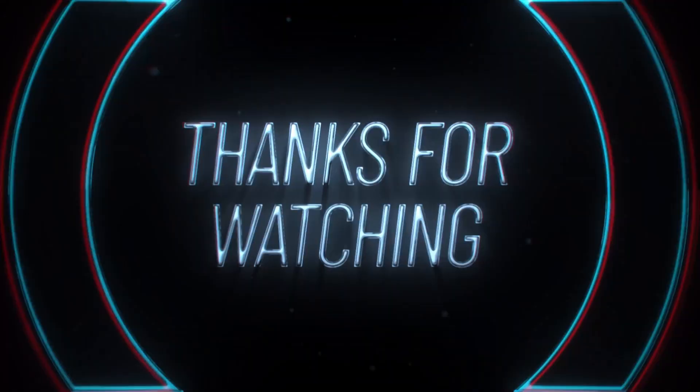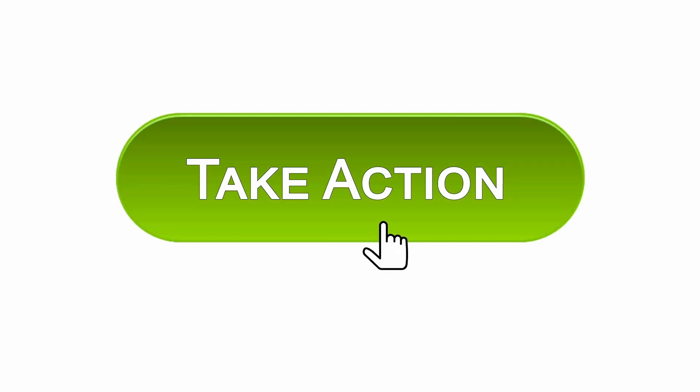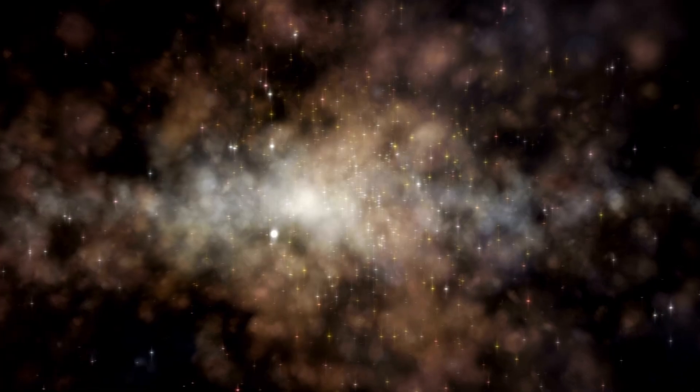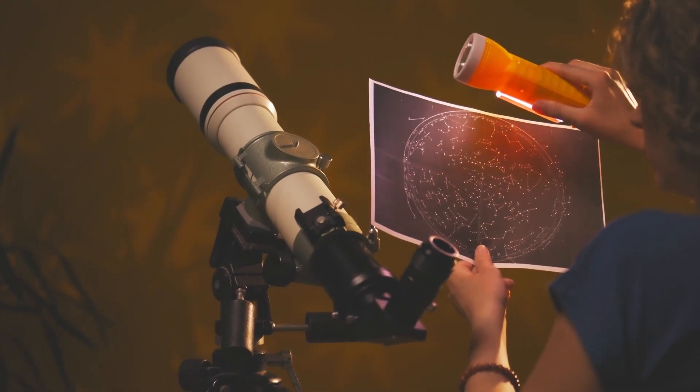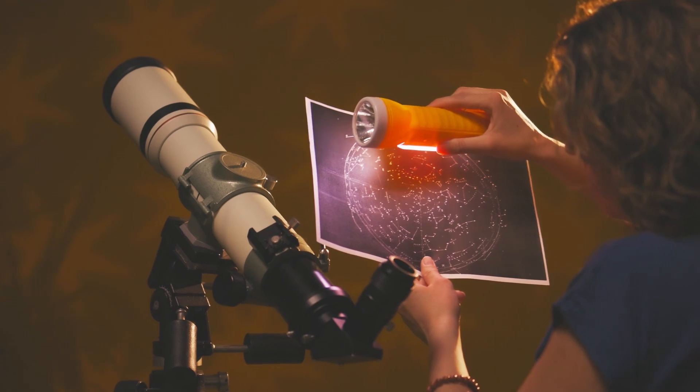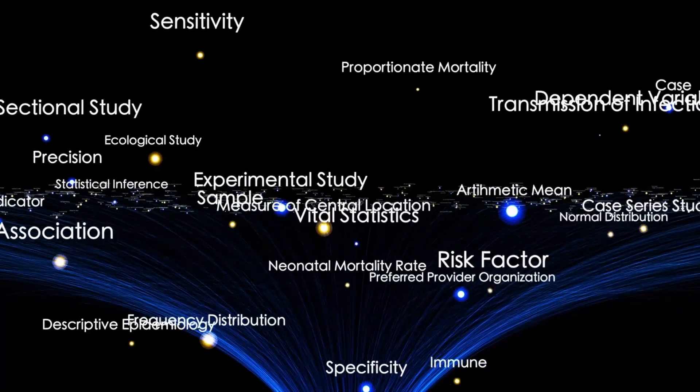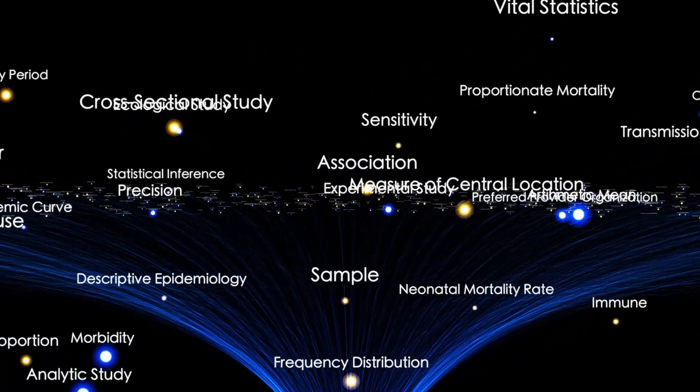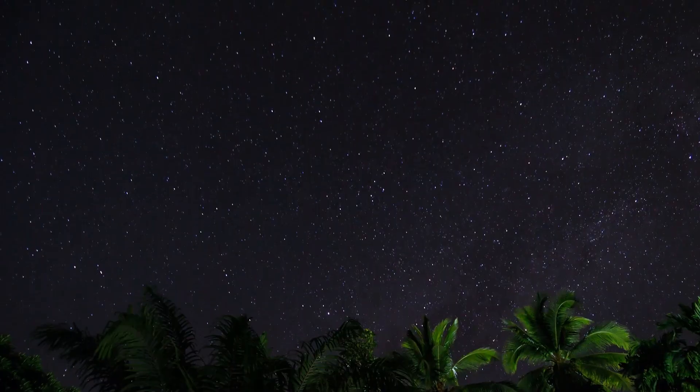One scientist described it as a comet that forgot how to be a comet. All these findings pointed toward something very different, an object born in another solar system with its own chemistry, pressures, and heat thresholds. Not only was 3I Atlas older, but it seemed chemically foreign, proof that planets formed differently across the galaxy. But as the data got stranger, so did the challenges. The very tools built to study comets began to struggle. Models stopped working. Shapes didn't match formulas. It was becoming clear this wasn't just a weird comet. This was something we didn't have a name for.